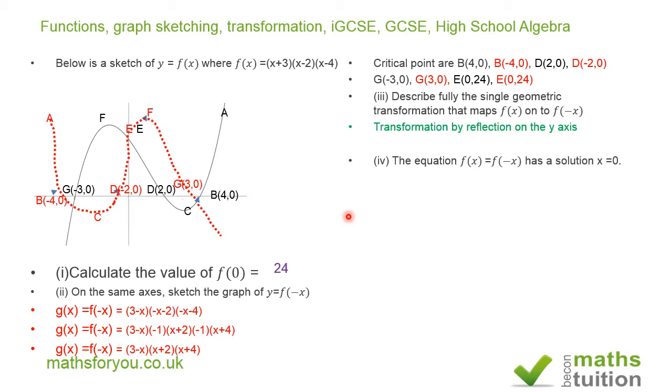For the last one, it says the equation f of x equals f of minus x has a solution of x equals 0. Let's check it out. For the original function on the left-hand side and the f of minus x or g of x on the right-hand side, we've got that now.